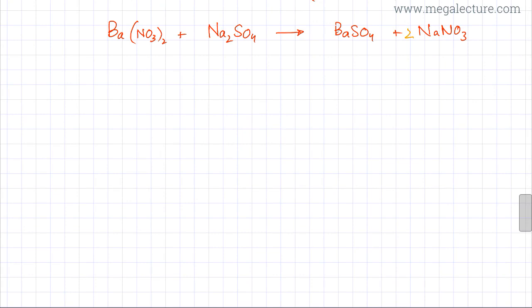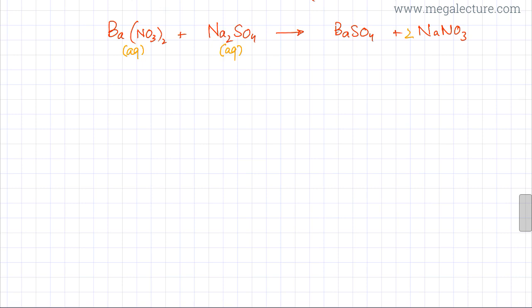We need to first write down the state and find the solubility of the substances. If you look at the solubility table, you would notice that all nitrates — anything that contains NO₃⁻ — or group 1 compounds are soluble. So barium nitrate is in aqueous state. Similarly, Na₂SO₄ is also a group 1 compound, so it is also soluble and in aqueous state.